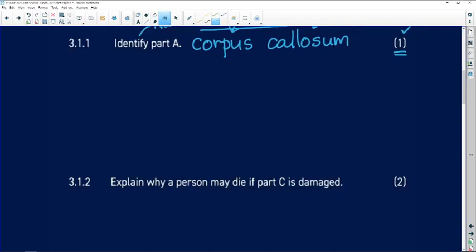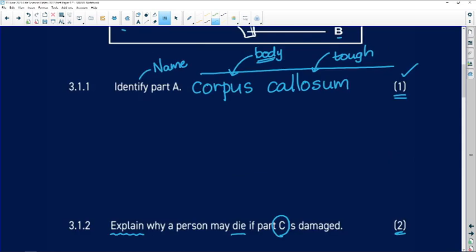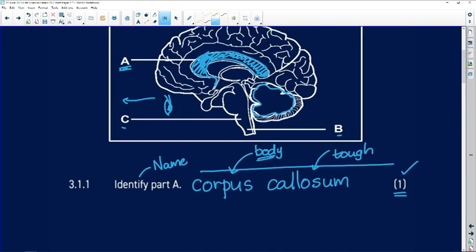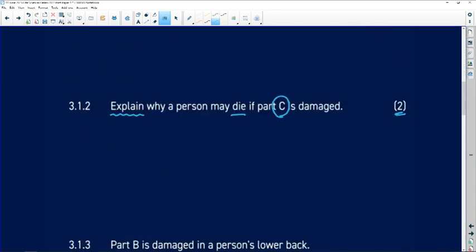Question 3.1.2: we have to explain, so this is out of two marks, which means we have to unpack it a little bit and use sentences, not just write one word. Explain why a person may die if part C is damaged. Going back to our diagram, we can see part C, and we can identify part C as the medulla oblongata.